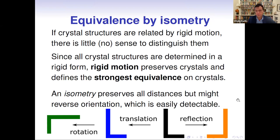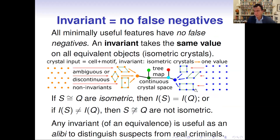That's why it's important to clarify the concept of equivalence. Since crystal structures are determined in a rigid form, it's very natural to study them up to rigid motion — there's no point to distinguish a rigid object under translation, rotation, or sometimes even reflection. Our strongest equivalence on crystals is rigid motion, but for simplicity we include reflections and consider more general isometries. An isometry is any map that preserves distances; in Euclidean space, an isometry is a composition of rotations, translations, and reflections. An invariant is a function that takes the same value on all equivalent objects.